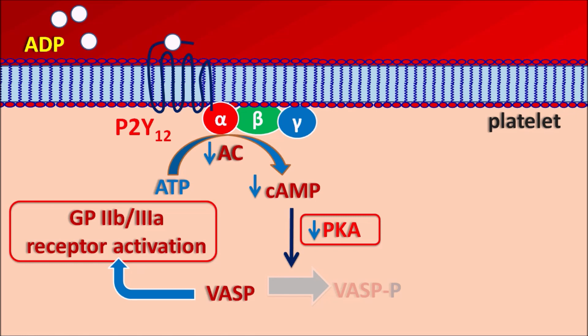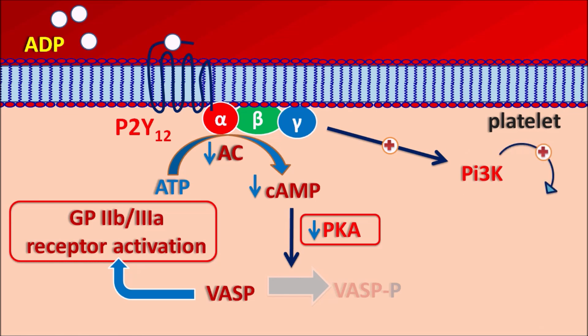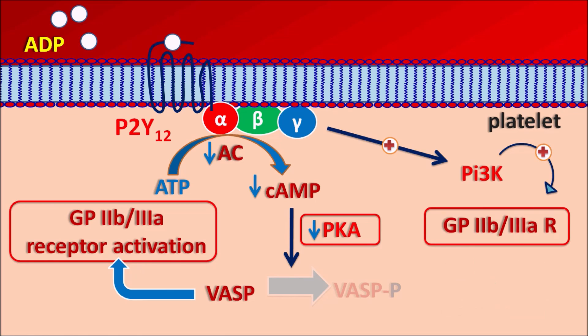This action is mediated by the alpha subunit of the G-protein coupled receptor. The beta-gamma subunits are responsible for activation of another messenger — PI3K, phosphoinositide 3-kinase. This messenger is also responsible for activation of GP2B/3A receptors, resulting in platelet aggregation. So ADP increases platelet aggregation through a decrease in cyclic AMP as well as an increase in PI3K levels.